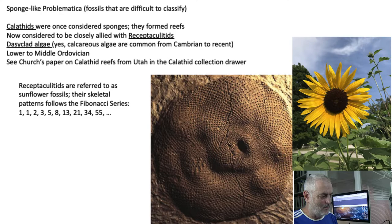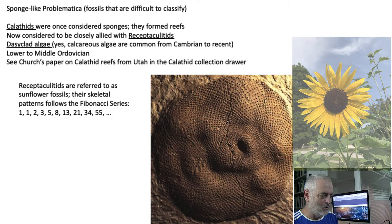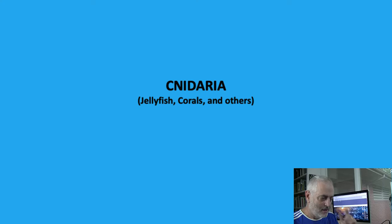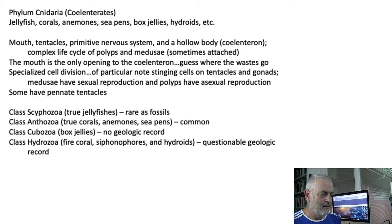So that's our fossil sponges — pretty simple organisms, colonial and solitary, living mostly in oceans. There may have been some freshwater ones, but I'm not quite sure. Next, we go on to the cnidarians. We're going up in complexity — we're really talking about jellyfishes, corals, and a few other things that are in there.